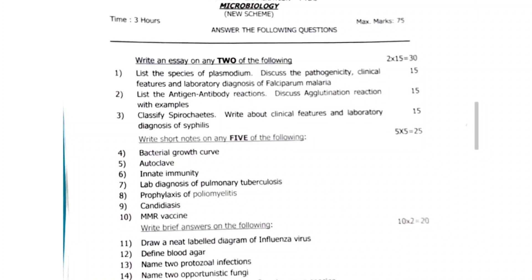Second question: list the antigen-antibody reaction, discuss agglutination reaction with examples. Third question: classify spirochetes, write about clinical features and laboratory diagnosis of syphilis. Next, write short notes on any 5 of the following — out of 7 you have to answer 5, 5 into 5 equals 25 marks.